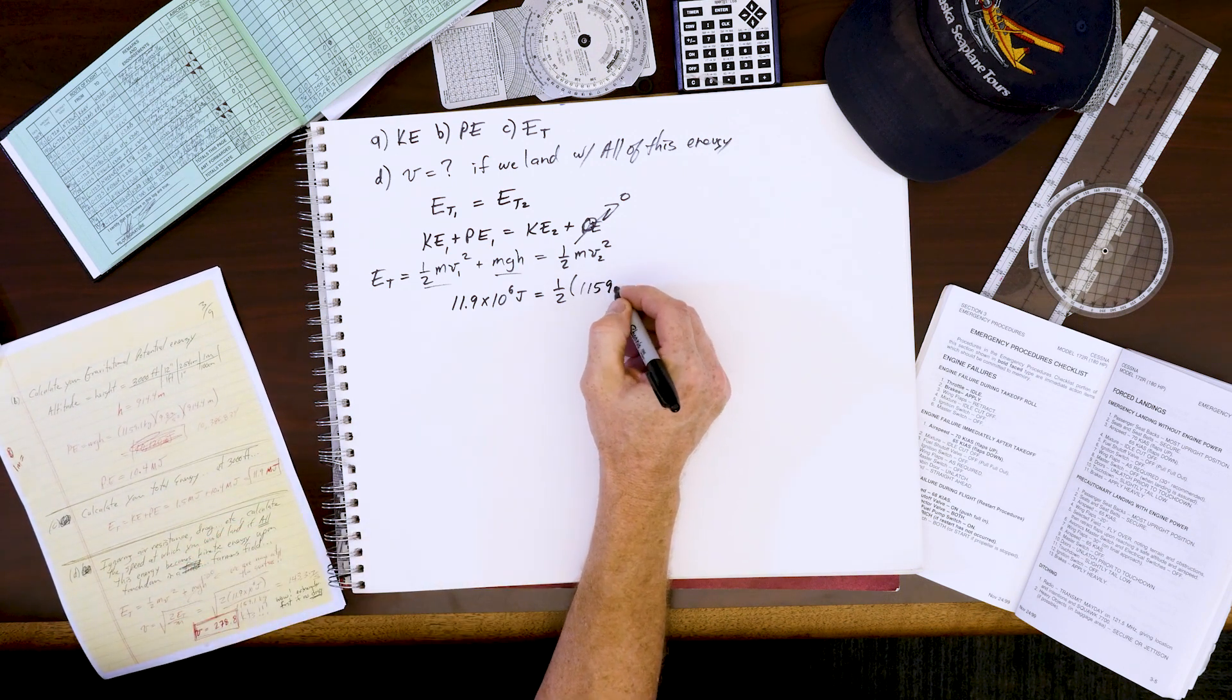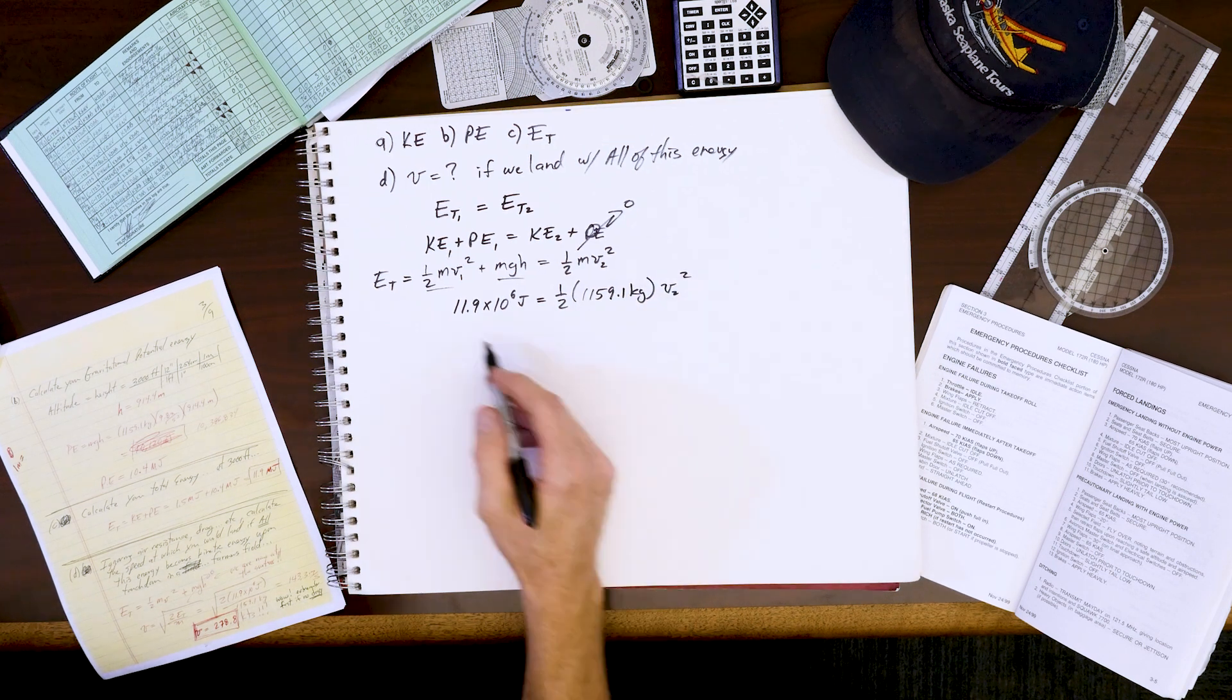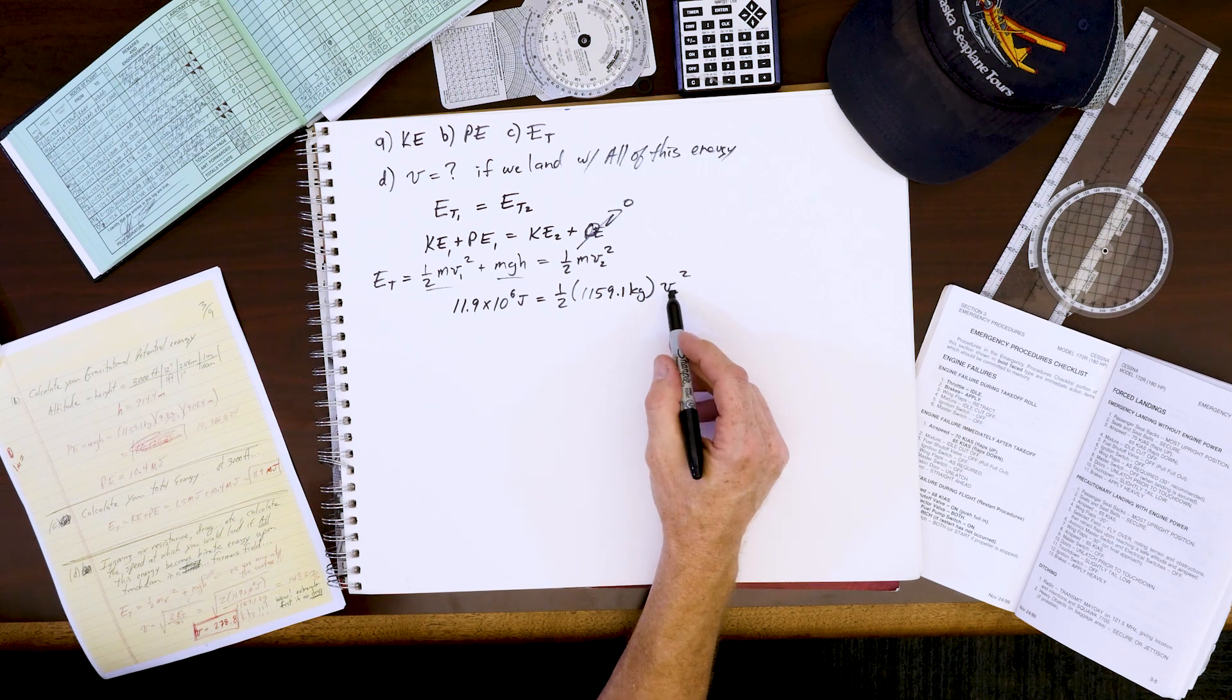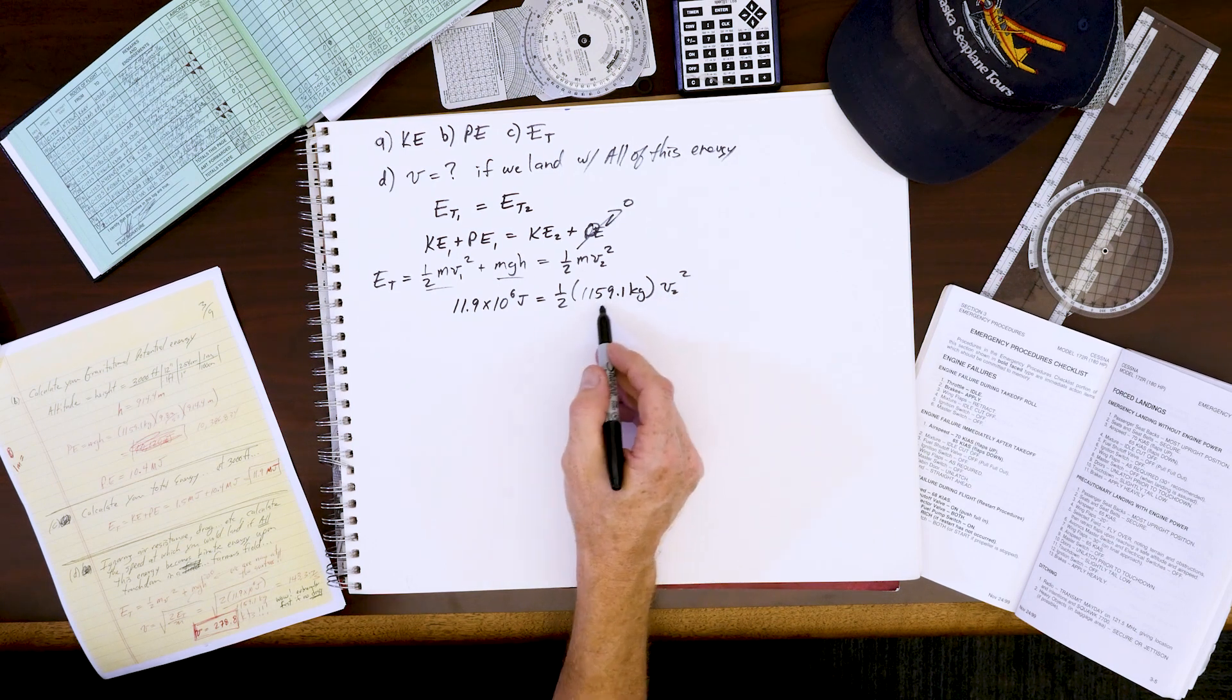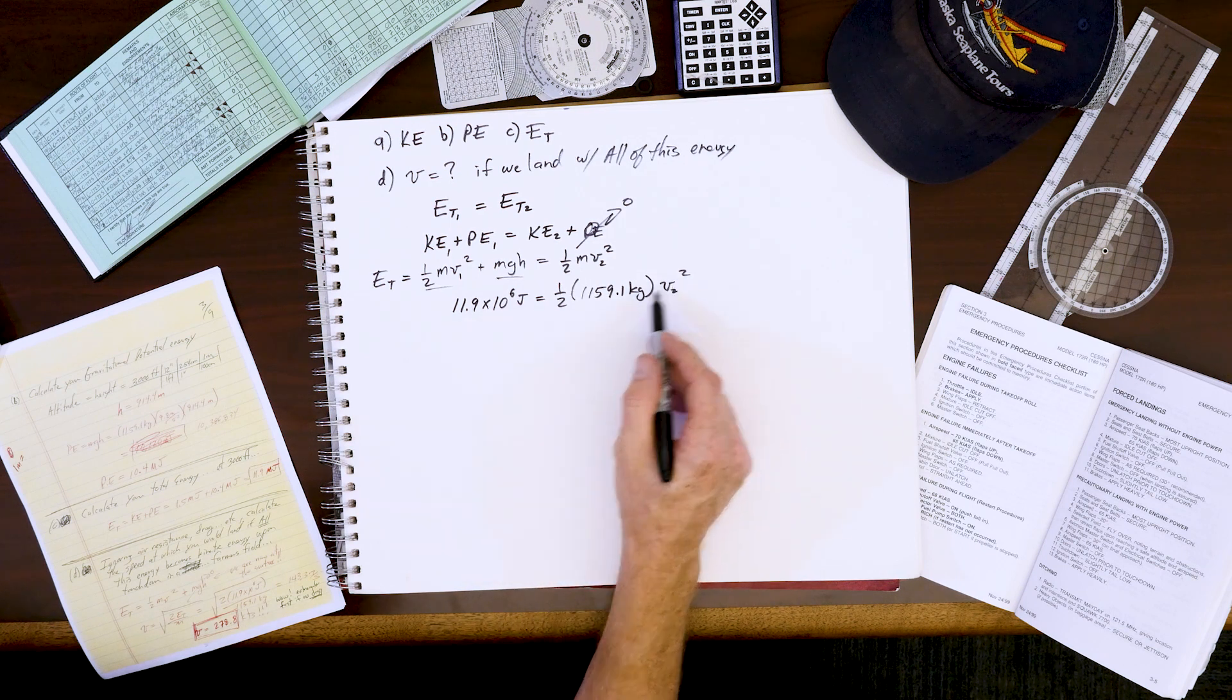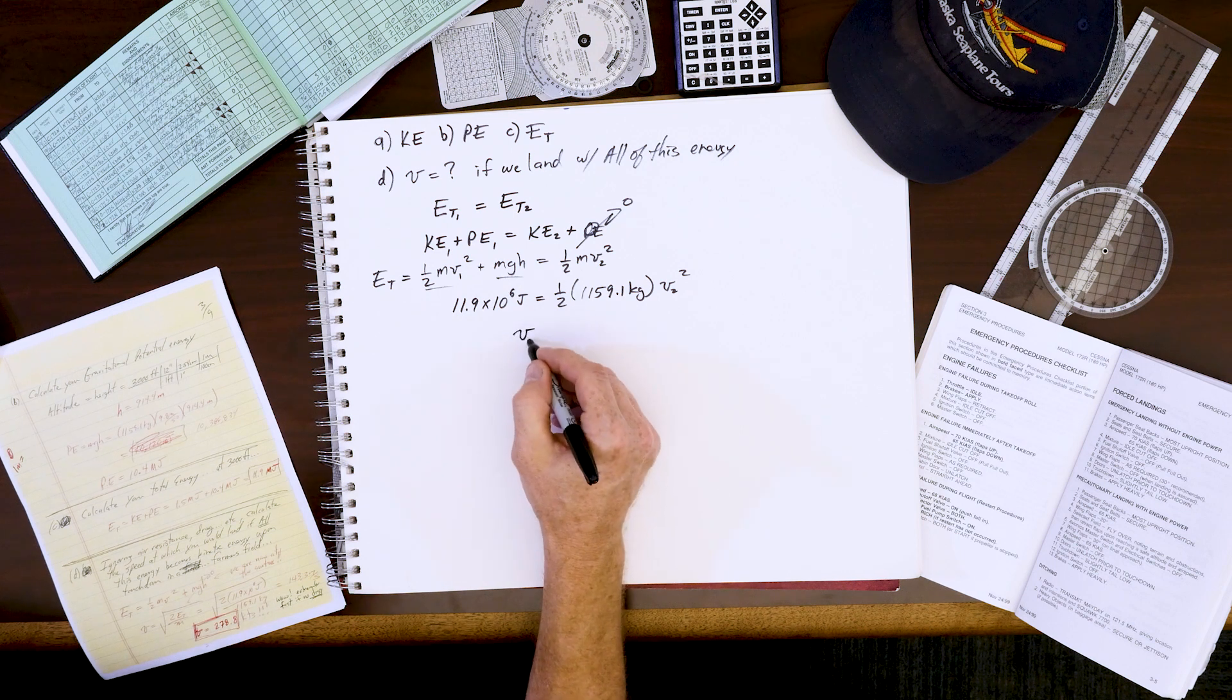Times v₂ squared. Then I asked the class, you look at this a moment and they all say 'aha, we only have one unknown here, so we can move these constants to the left side, take a square root.' Everyone should pause your video and try that now on your own, and we end up getting v₂...